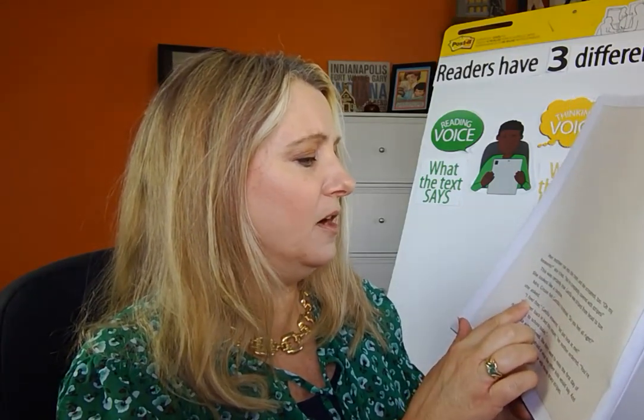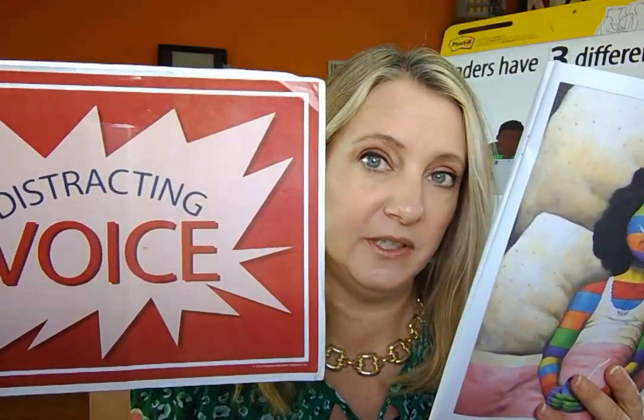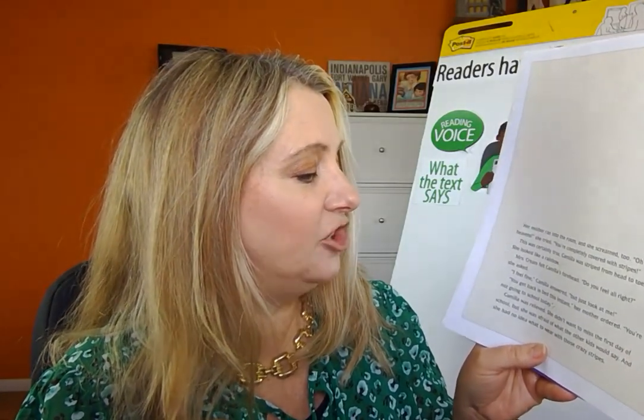So what am I supposed to do? Stop and reread — re-engage my reading voice and make sure my thinking voice is focused. Let me go back to reread. Do I remember this part? No. Do I remember this part? Yes — start there. 'I feel fine, Camilla answered. But just look at me. You get back in bed this instant, her mother ordered. You're not going to school today.' Her mom's going to make her stay home on the first day of school? Is that a thinking voice thought or a distracting voice thought? That's a thinking voice thought — so keep going. 'Camilla was relieved. She didn't want to miss the first day of school, but she was afraid of what the other kids would say, and she had no idea what to wear with those crazy stripes.'